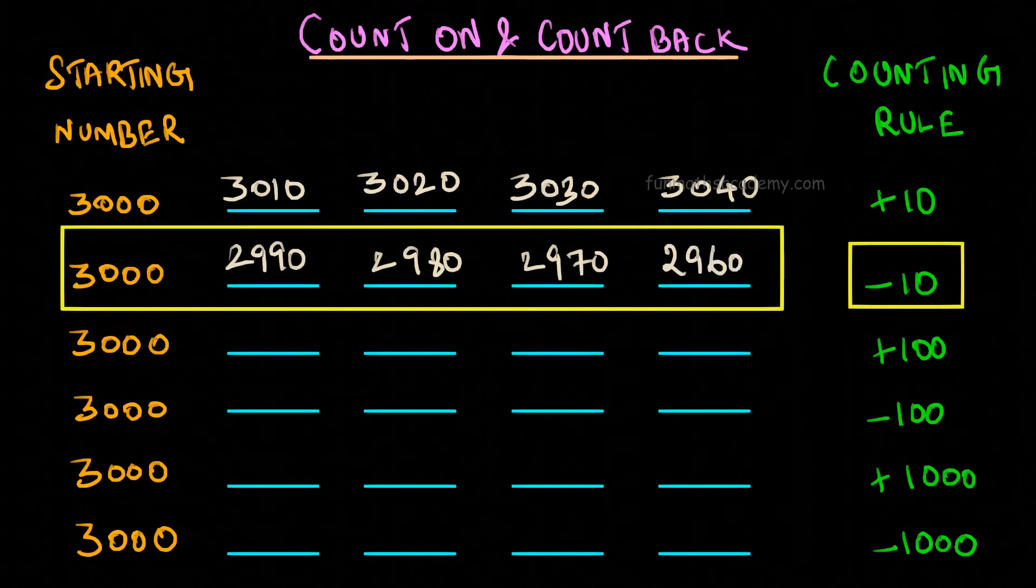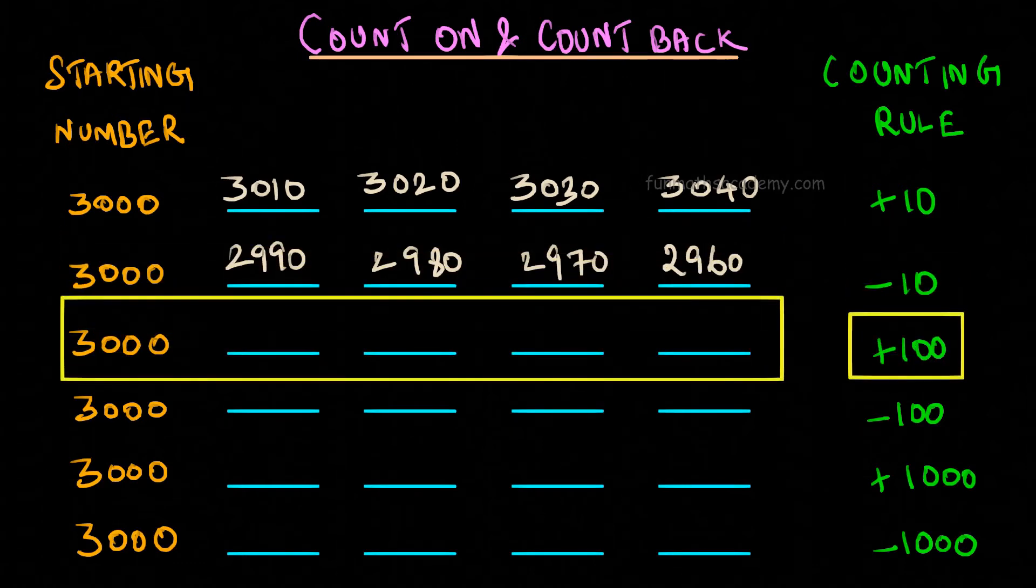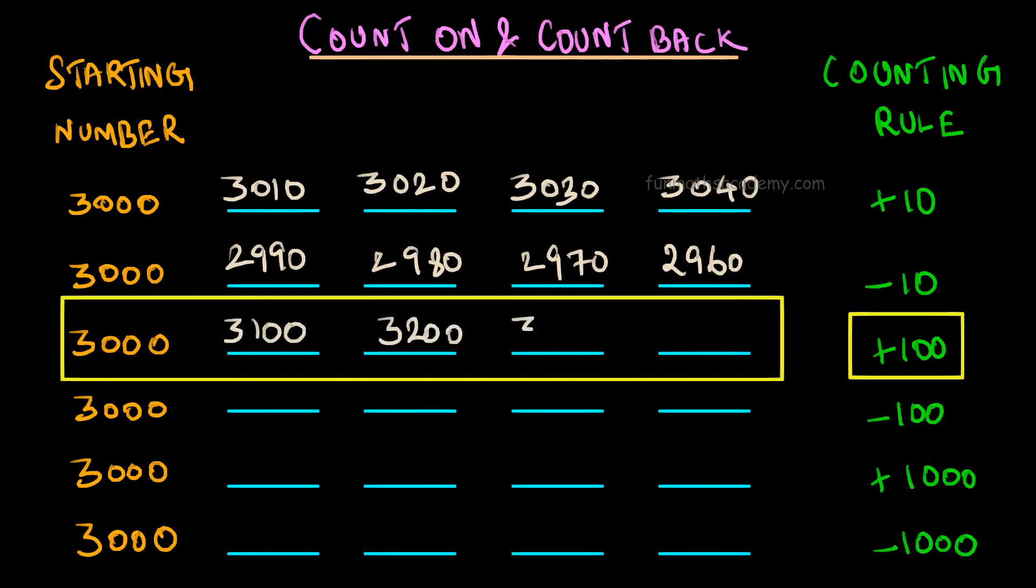In the same way, when counting rule is plus 100, we get 3000, 3100, 3200, 3300, 3400.